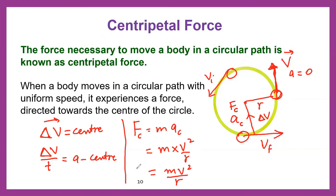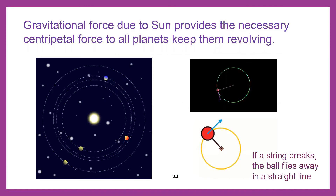That is the equation for centripetal force, where m is the mass of the object, r is the radius, and v is the constant velocity with which the object is moving along the circle. Gravitational force due to the sun provides the necessary centripetal force to all planets to keep them revolving.